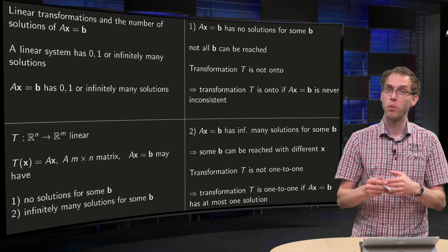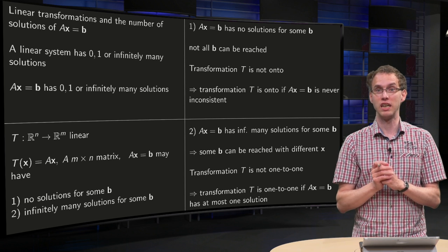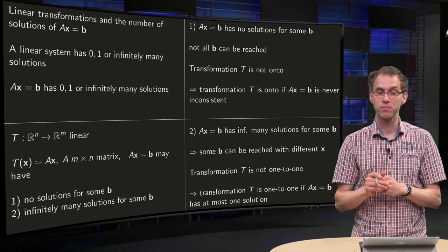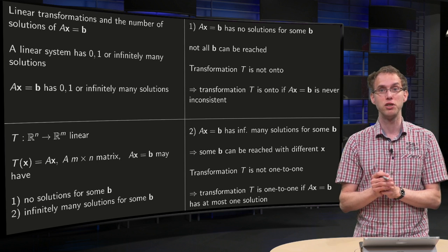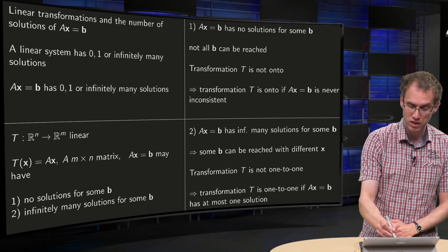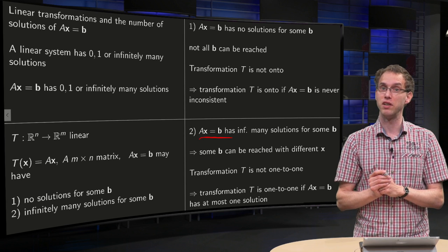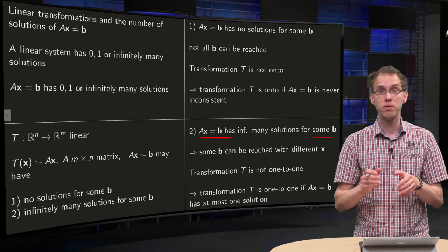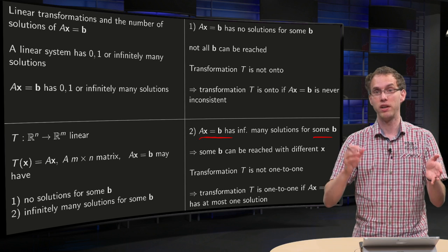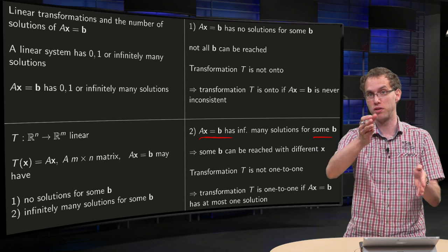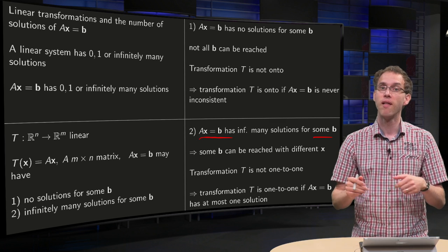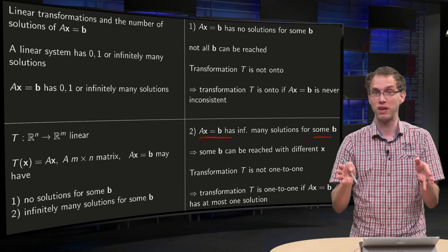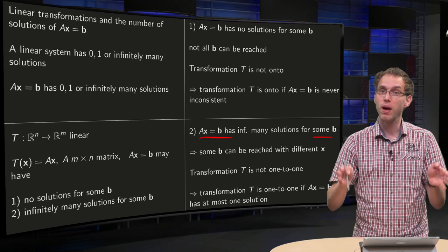What about the infinitely many solutions case? A linear system can have infinitely many solutions. If your linear system has infinitely many solutions, then the matrix equation Ax equals b has infinitely many solutions for some b. That means there are multiple x's — say x1 and x2 — such that Ax1 equals b and Ax2 equals b. So there are infinitely many values of x, all mapping to the same b.